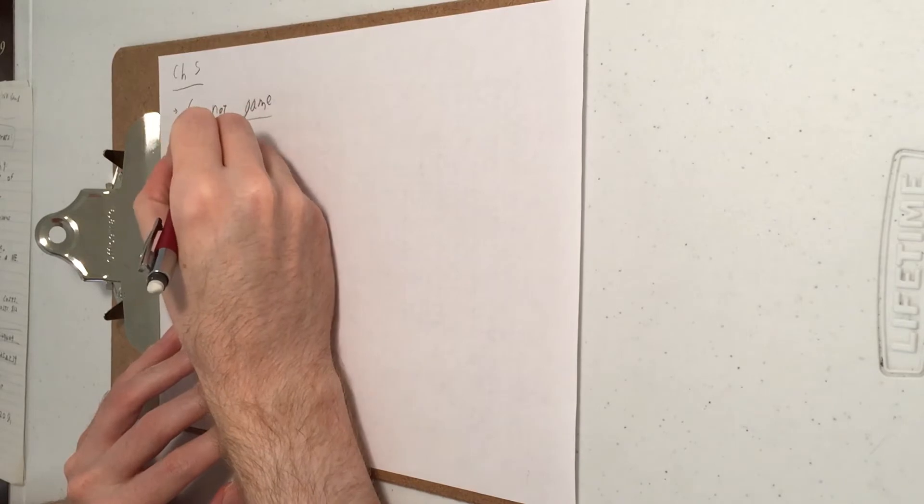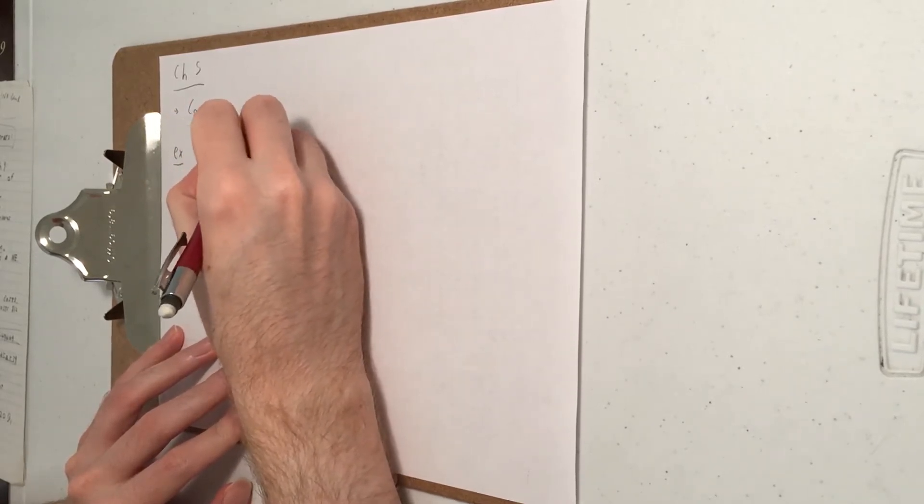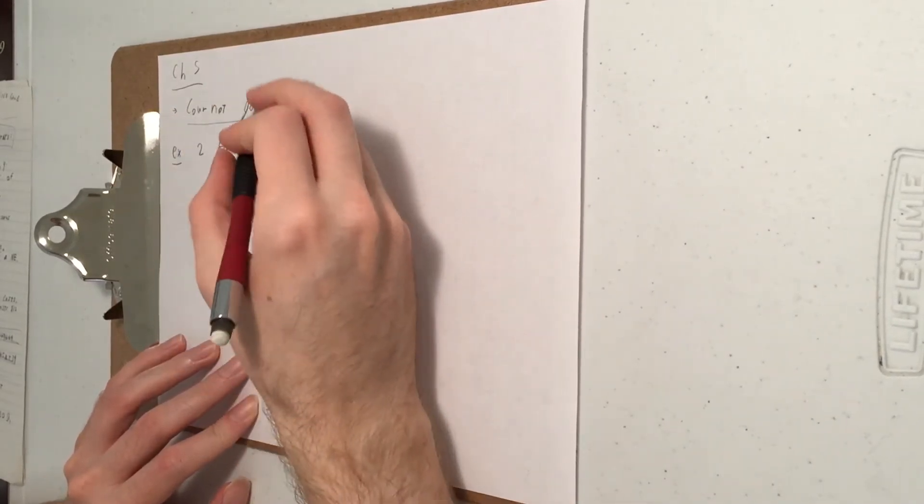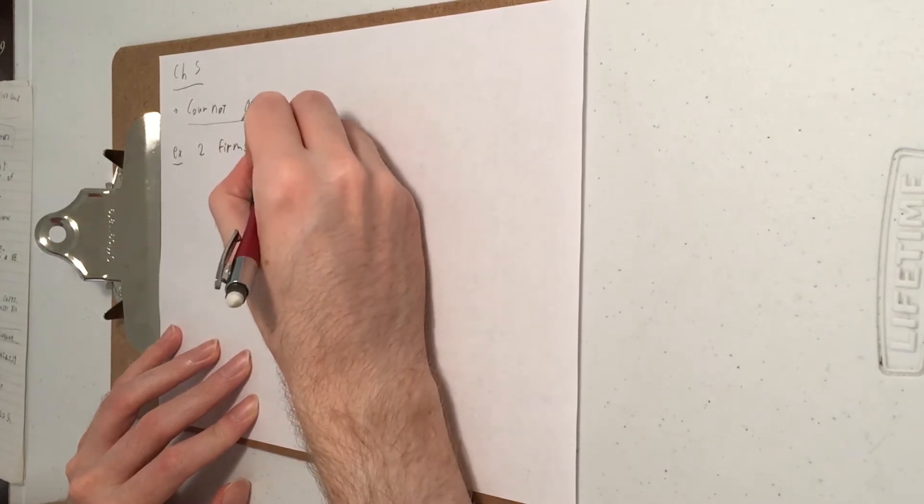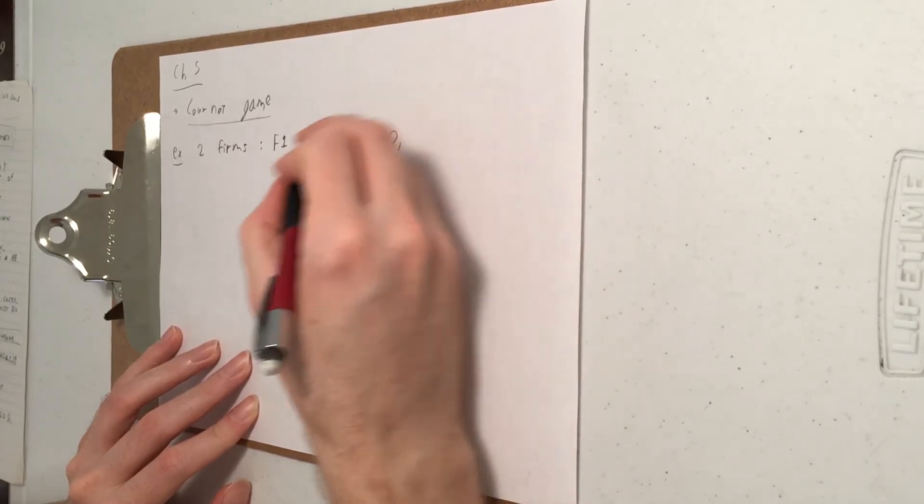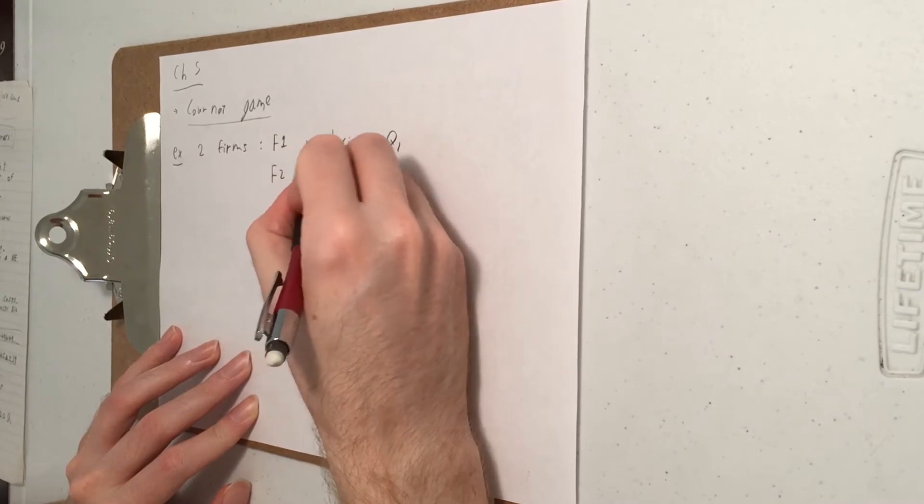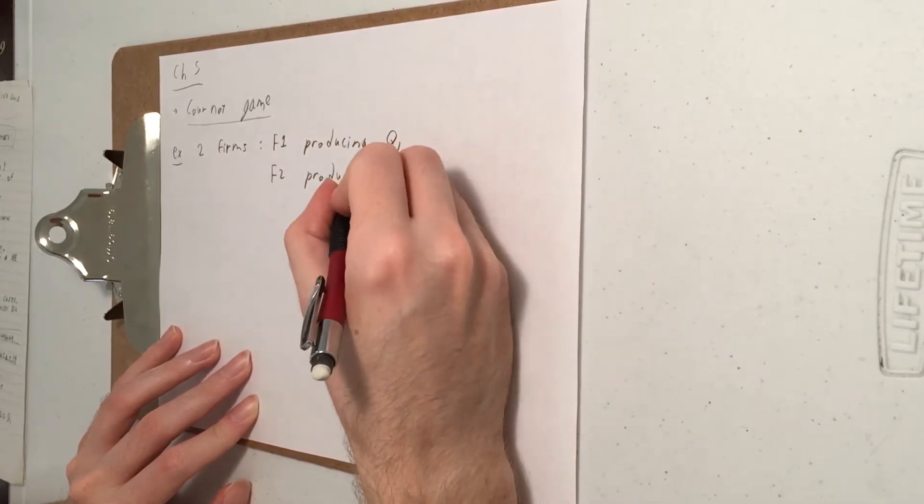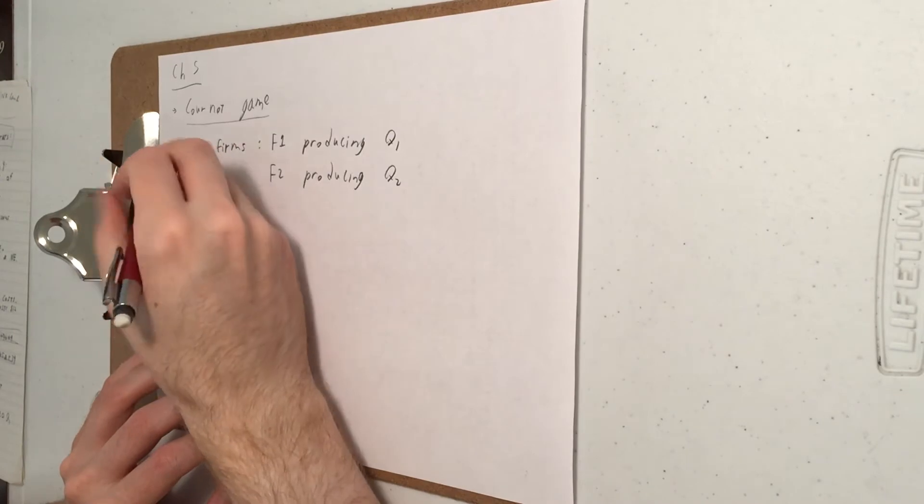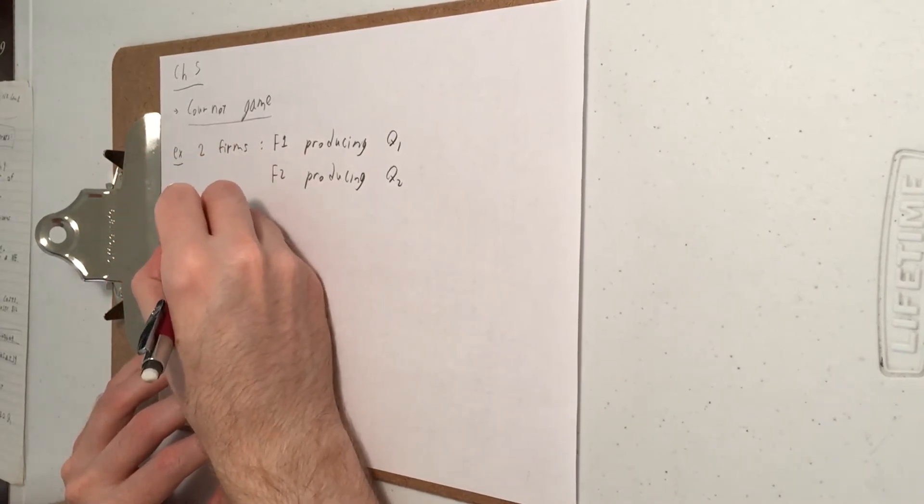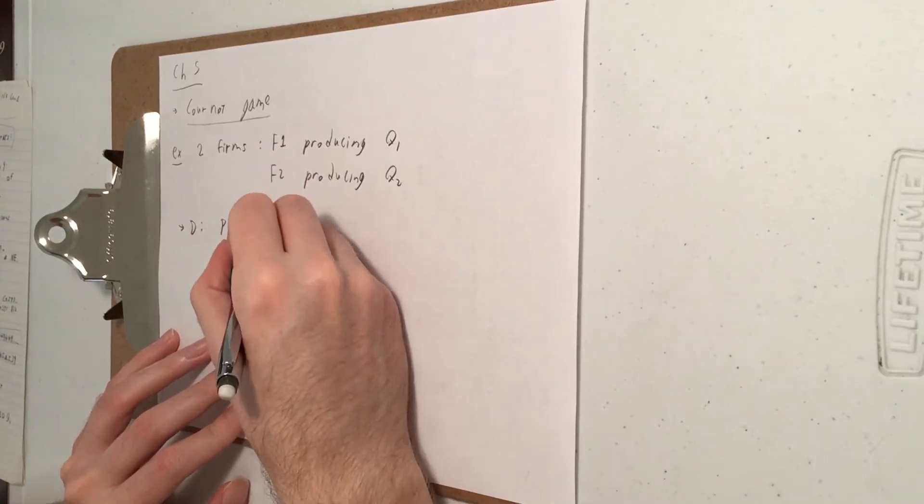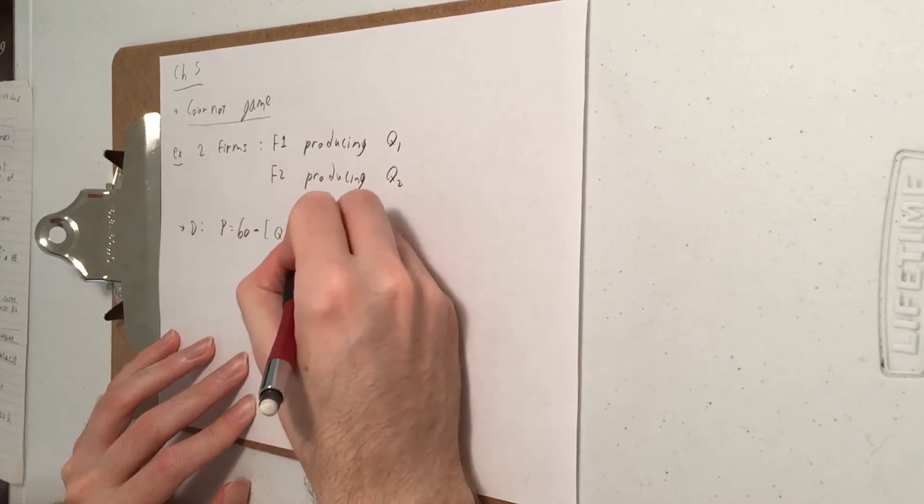In our example we'll have two firms. The same model can scale up to have three or more firms so don't worry about that simplification. We'll have firm 1 and they make quantity Q1. Firm 2 makes quantity Q2. The demand curve in this market is going to be price equals 60 minus Q, but Q is Q1 plus Q2.